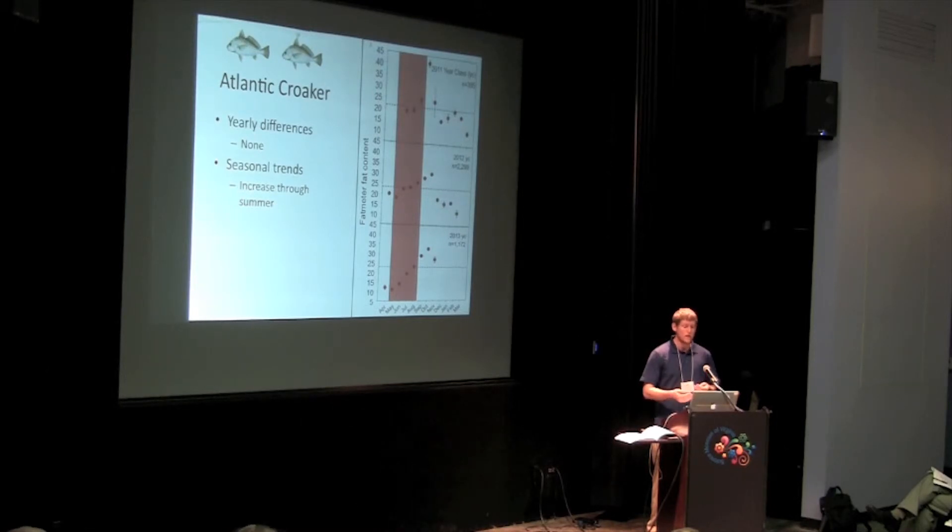Here I've highlighted the months used to estimate recruitment for Croaker and opposite of what we saw in flounder, condition seems to increase through the summer and is highest at fall. Then, the healthiest fish migrate out of the Bay, so only the poor conditioned fish are left over winter, and that's statistically lower.